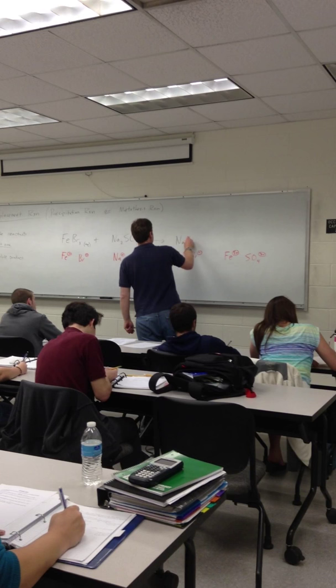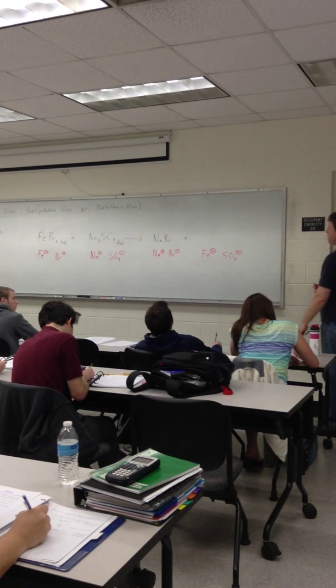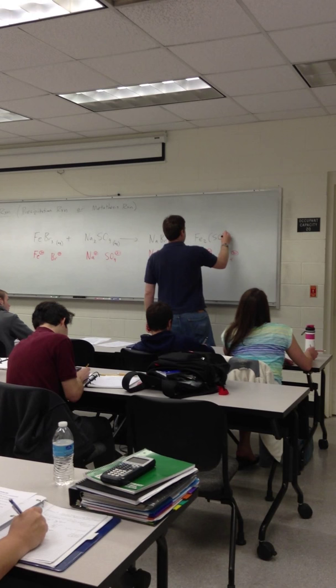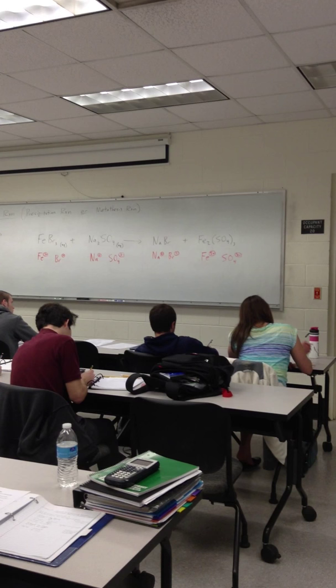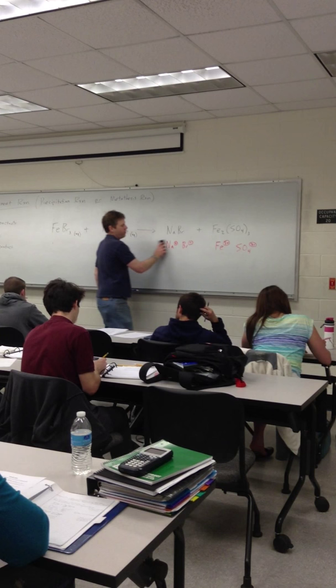A little bit trickier over here, though, because we've got an iron 3 plus and a sulfate 2 minus. Once again, that least common multiple of 6 pops up. So if we had 2 irons here, we'd have 6 positive charges. 3 sulfates, we'd have 6 negatives. So that's what we need to do here. So that would be iron 3 sulfate. Now that we've figured out the structures for our products, we can now, and only now, try to balance the chemical equation.